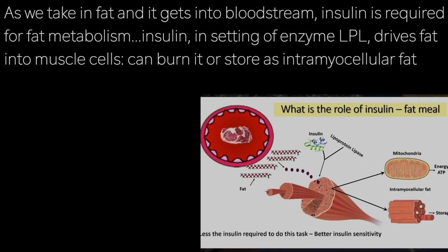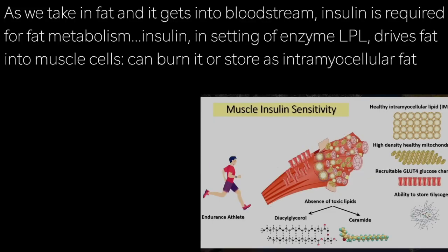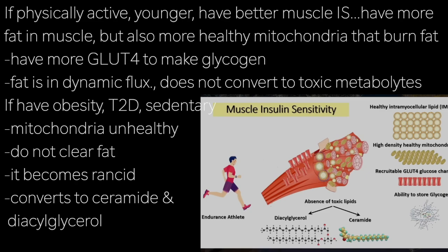Let's examine the intersection of fat and muscles. As we take in fat and it gets into the bloodstream, insulin is required for fat metabolism as well. Insulin, in the setting of an enzyme called LPL, drives the fat into the muscle cells. The muscles can either burn it or store it as intramyocellular fat. If you are physically active and younger, you have better muscle insulin sensitivity — more fat in your muscles, but accompanied by more healthy mitochondria that can burn fat, more recruitable GLUT4 to take in glucose, and you can make glycogen. Because your fat is in a dynamic flux, it does not get converted to toxic metabolites.